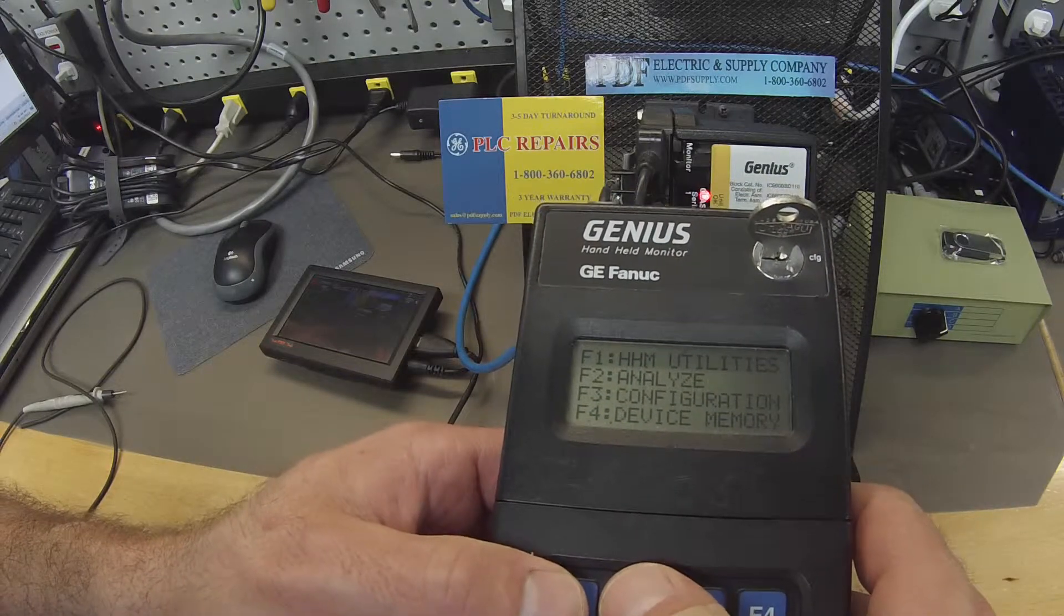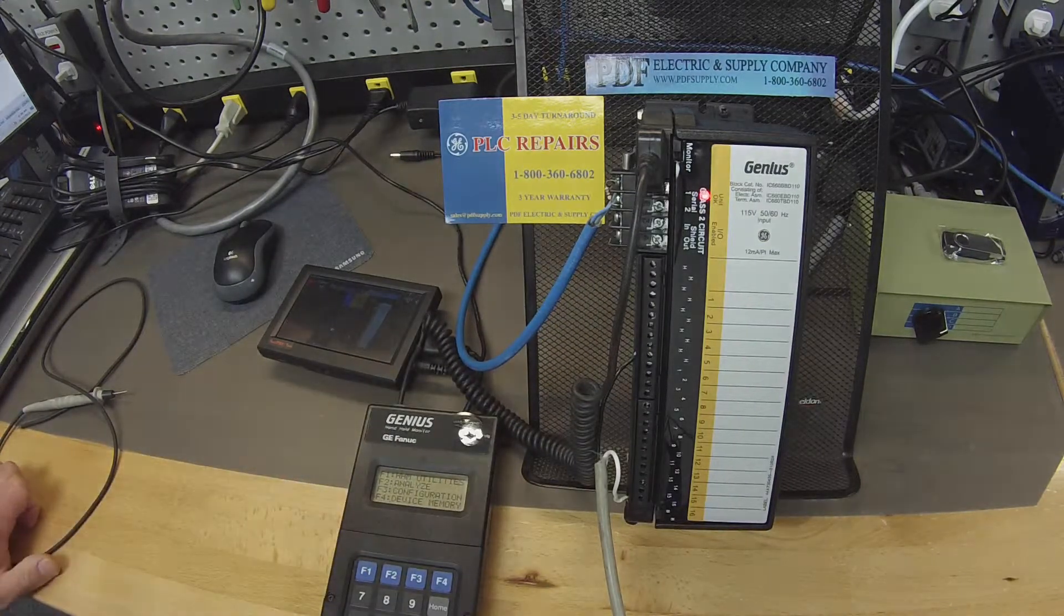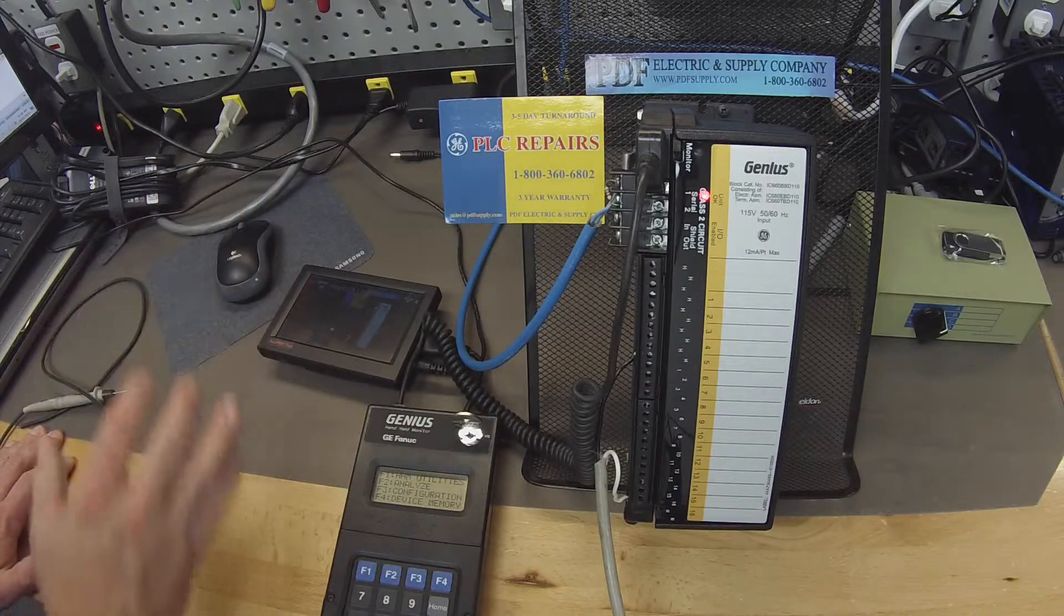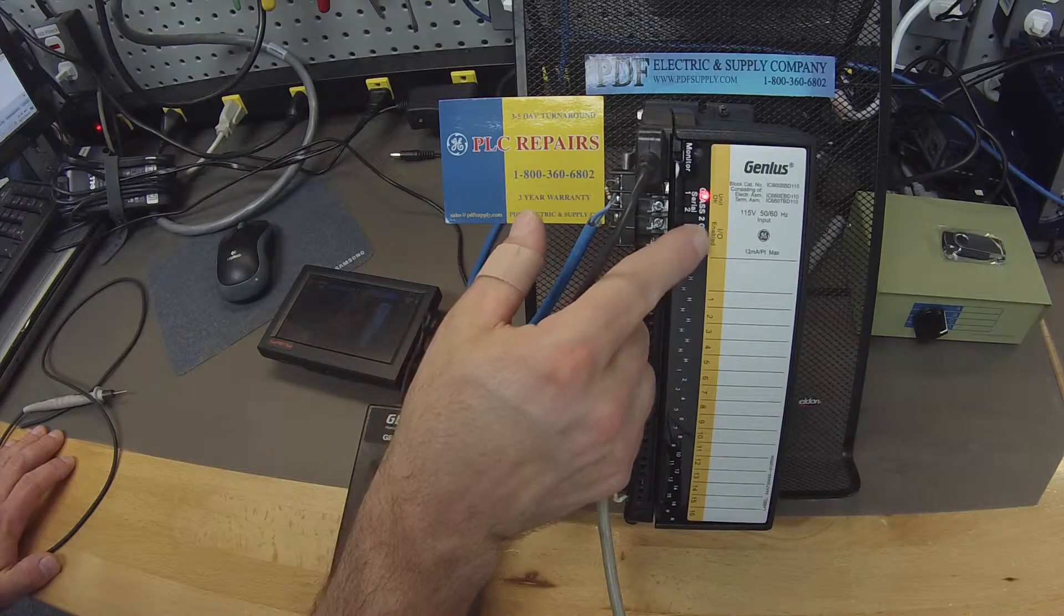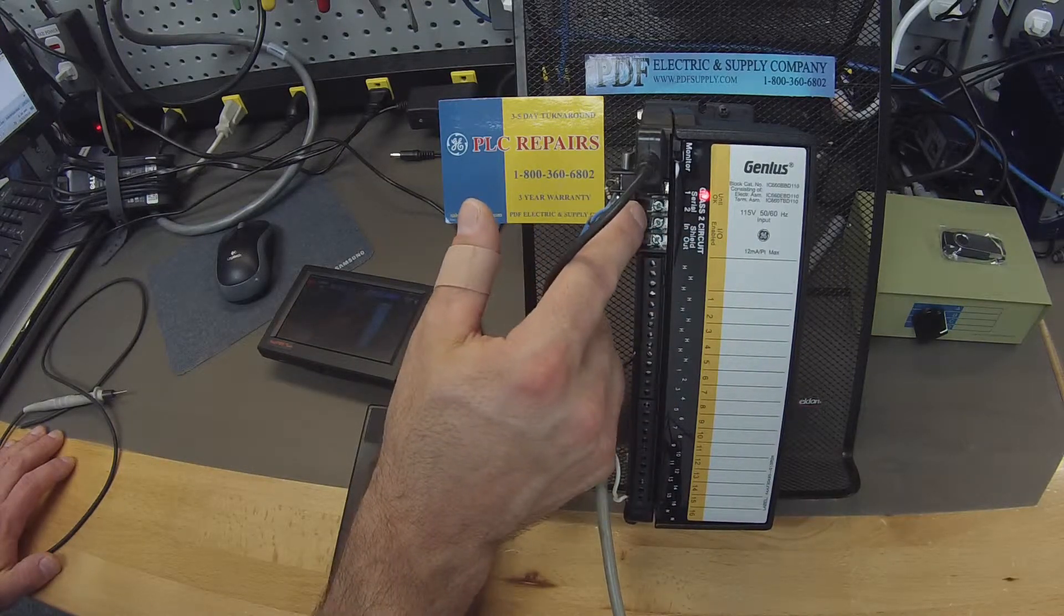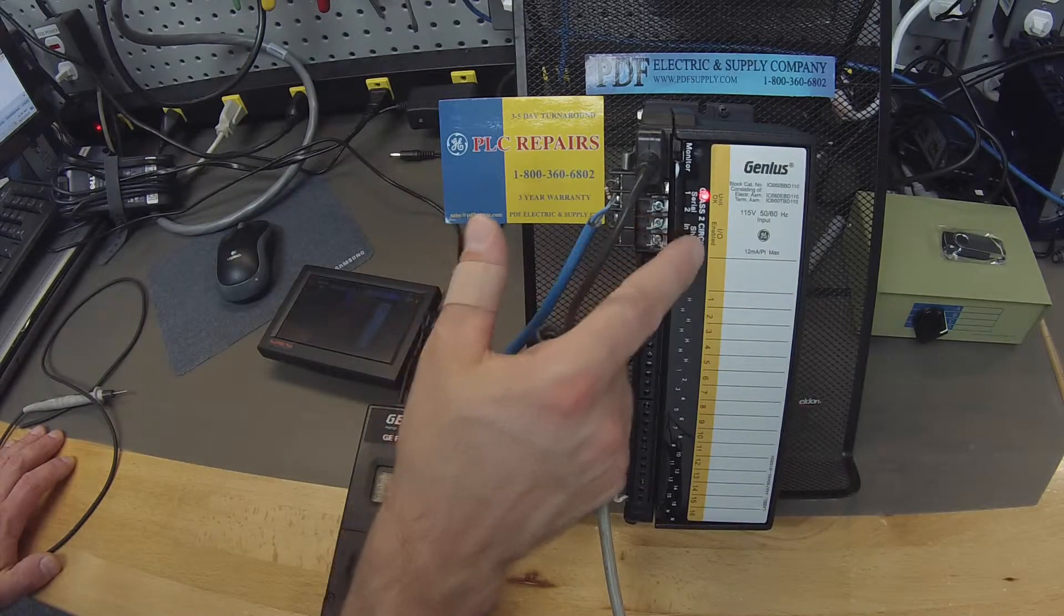Now, next thing I want to do is go ahead and get our processor into run mode. Now, what we're doing here is that we've reprogrammed this to be block number one and we want to be able to get the IO enabled LED light on. That tells us that this is communicating with the software and the BEM, the bus controller. Very important.